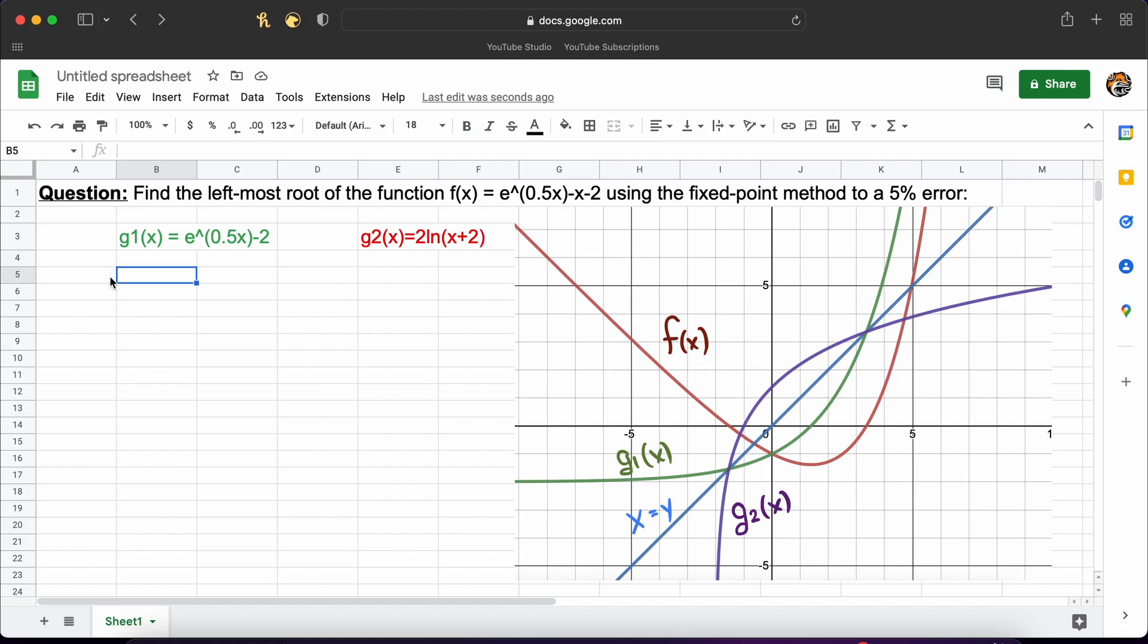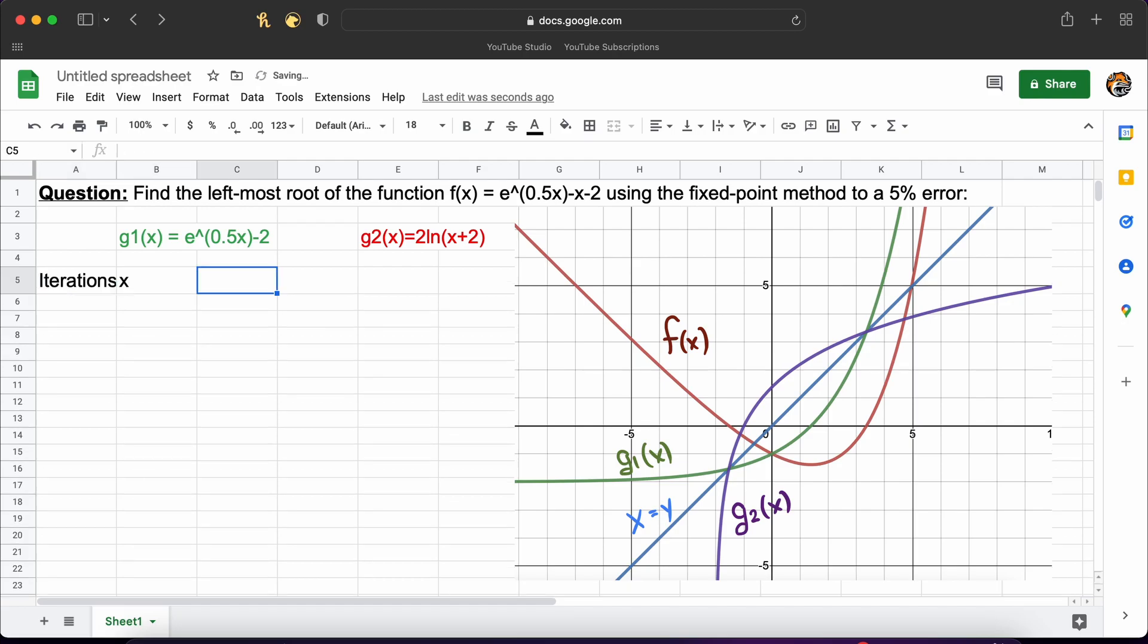Let's begin by creating some headers to organize our information. So let's add a column to track our iterations, a column for our current x guess for this iteration, a column where we evaluate g, then lastly we'll add a column for our percent error.